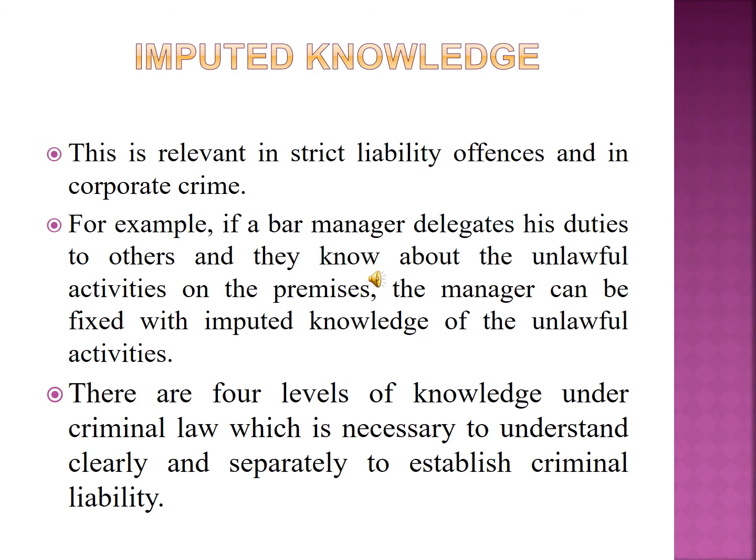The third type is imputed knowledge, which is relevant in strict liability offenses and in corporate crime. For example, if a bar manager delegates his duties to others and they know about the unlawful activities on the premises, the manager can be fixed with imputed knowledge of the unlawful activities. Apart from these types of knowledge, there are four levels of knowledge under criminal law which are necessary to understand clearly and separately to establish criminal liability.